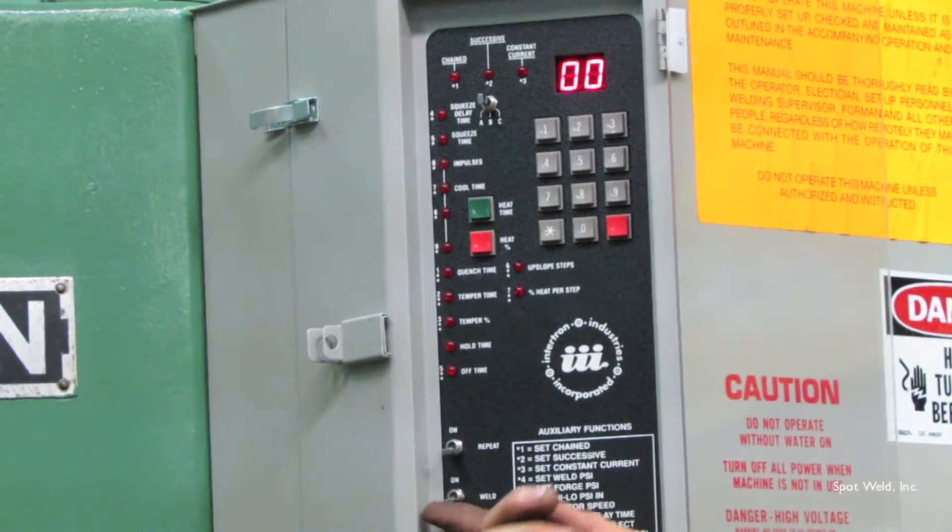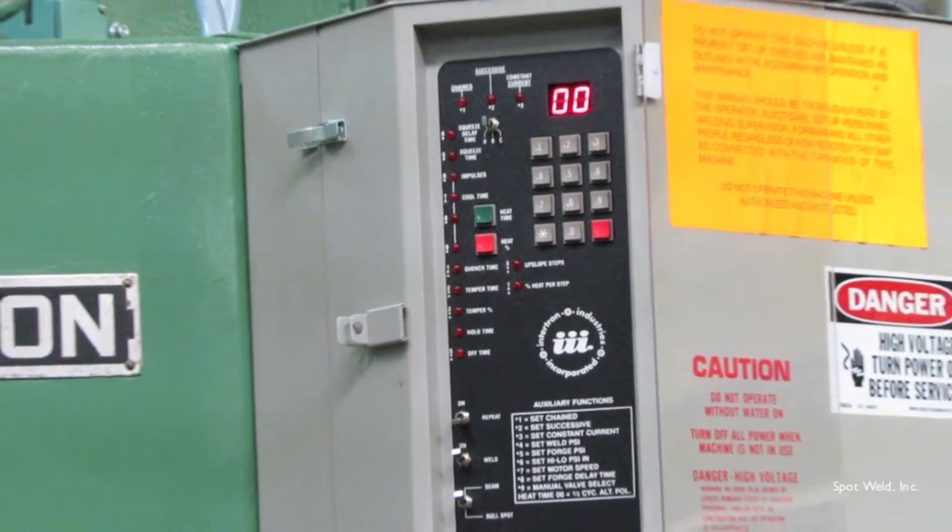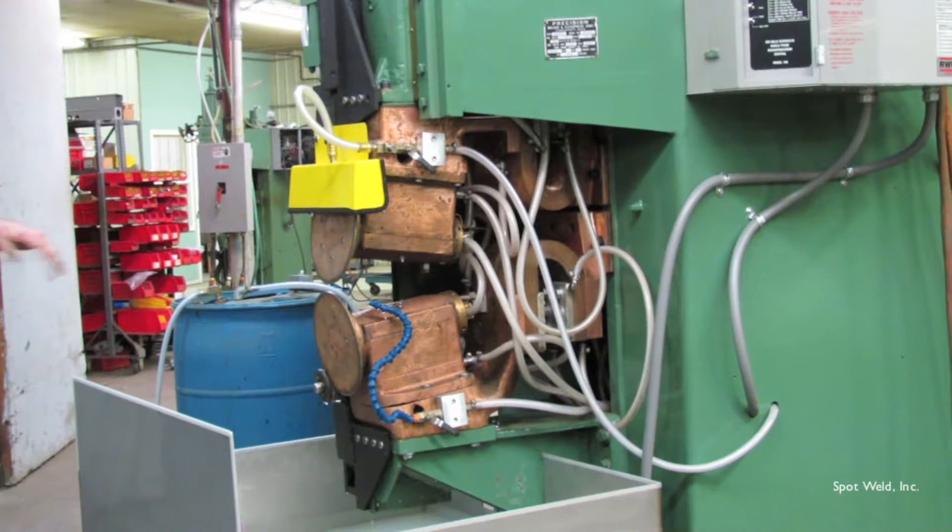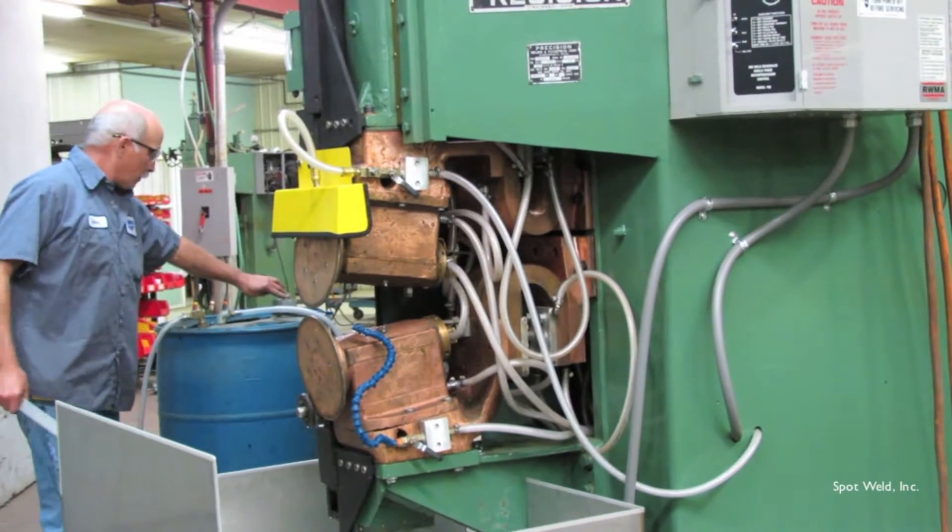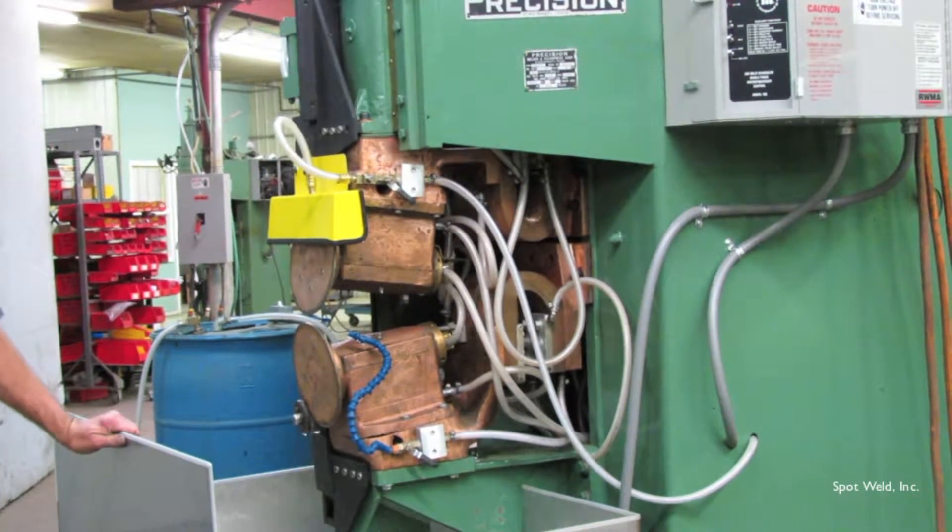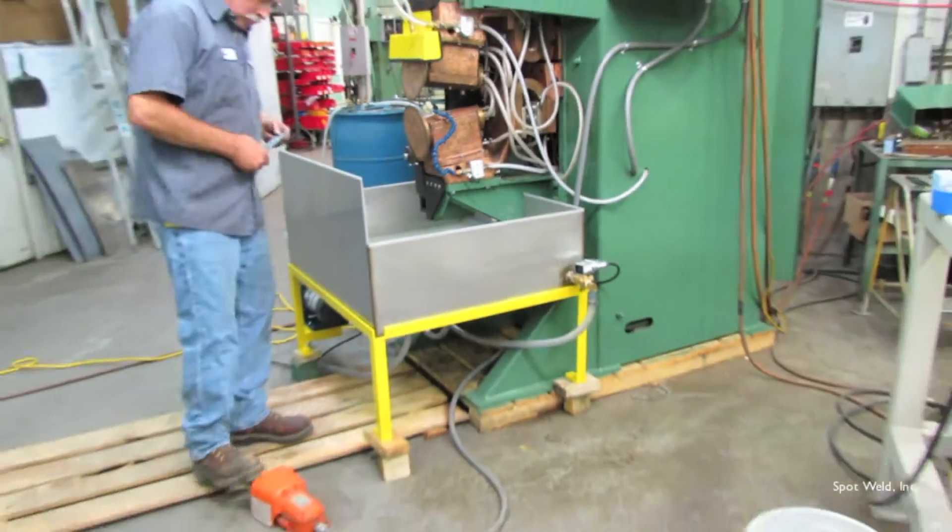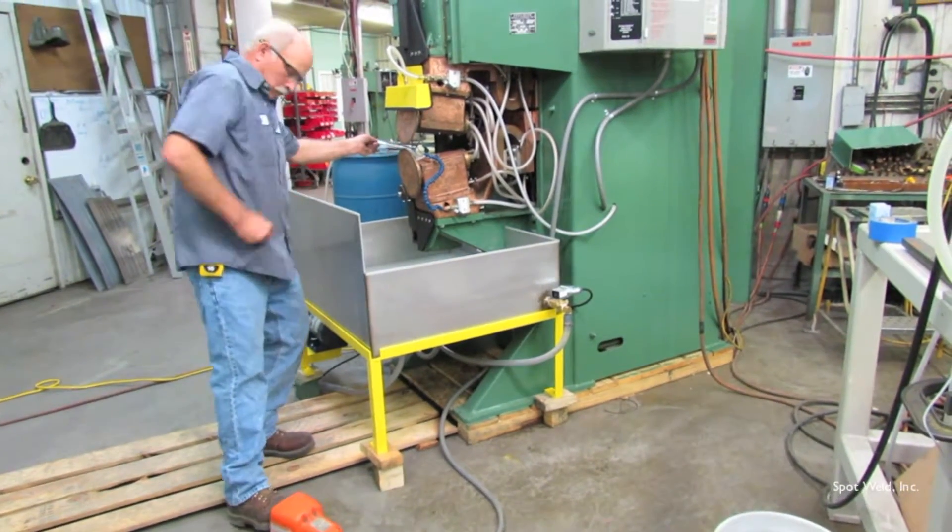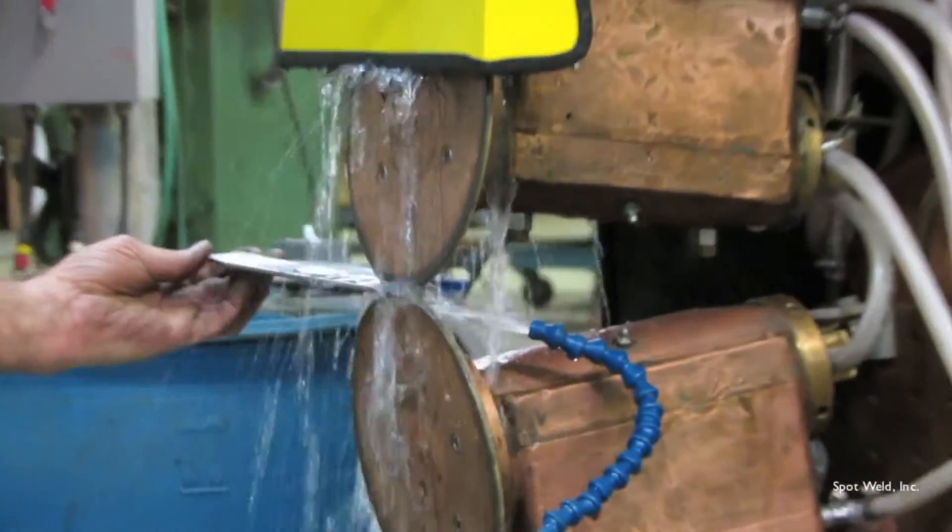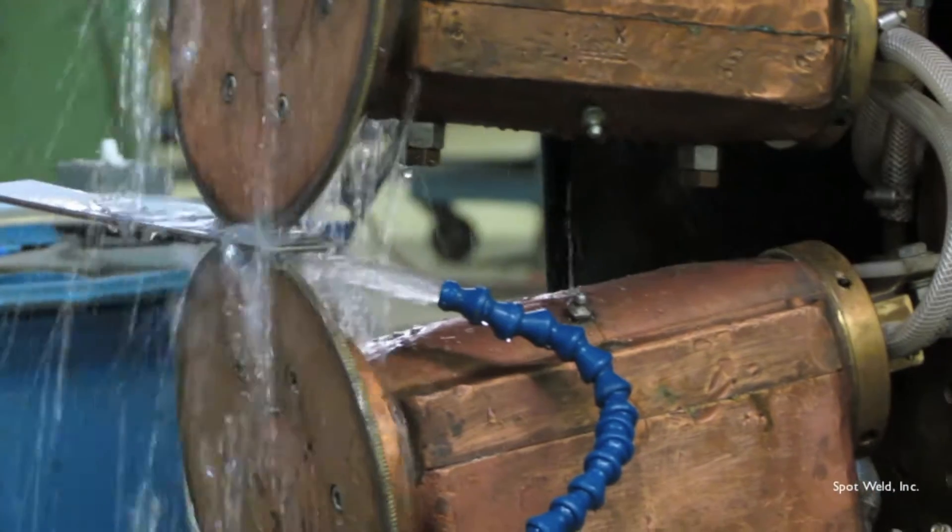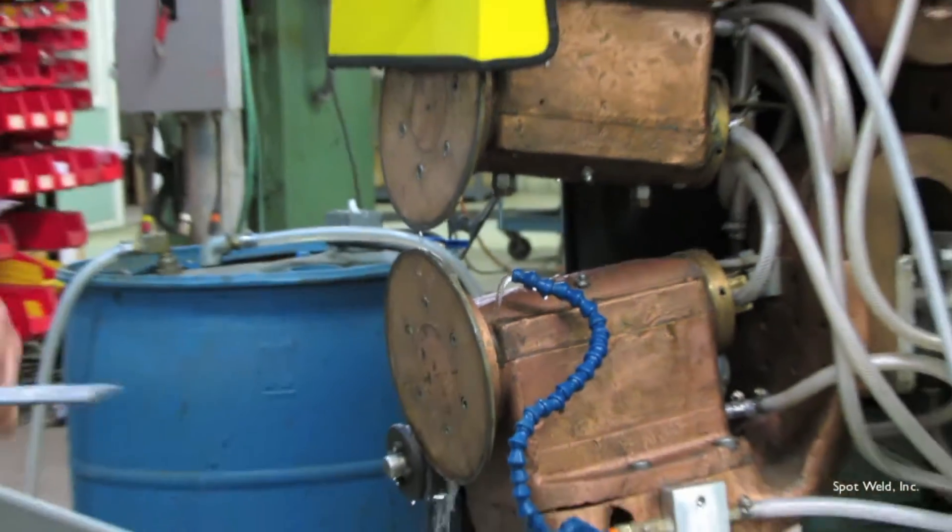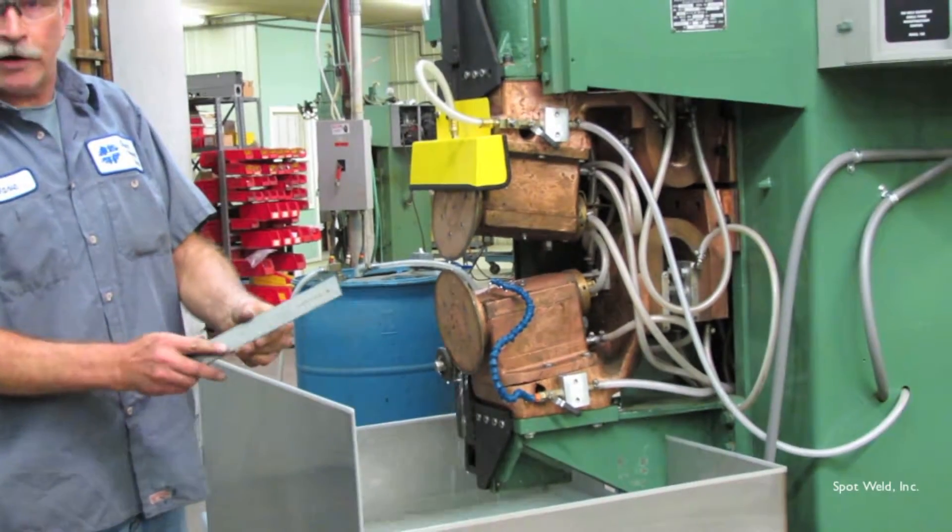We'll try that. Put the machine in weld. In seam mode. Make sure the internal water is on also. See the water starts. Then we get a weld.